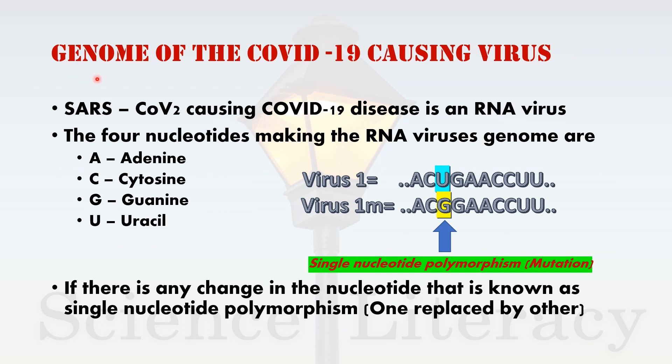As we know, a genome is a complete set of information in the form of four alphabets known as adenine, guanine, cytosine, and thymine. These form the genetic material — the deoxyribonucleic acid, or DNA. Viruses are unique in having genetic material both in the form of DNA and RNA. The RNA strands differ from DNA by having uracil instead of thymine. SARS coronavirus 2 causing COVID-19 disease is an RNA virus.